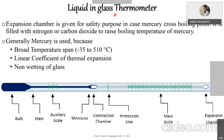For the liquid-in-glass thermometer, the bulb portion is the sensing point which makes contact with the hot medium. The stem is the main body, and we have a scale on it. The immersion line is the line up to which we need to dip the thermometer in the hot medium. We also have a linear scale and an expansion chamber at the end.